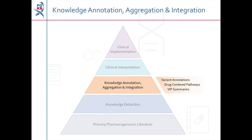Through extensive literature review, our scientific curators also create pathways and very important pharmacogenes, or VIP summaries. PharmGKB pathways are evidence-based diagrams centred around a particular drug that has pharmacogenomic associations. Pathway diagrams show the genes that interact with a particular drug and are accompanied by a written summary of the pathway, as well as links to related literature, drugs, genes and diseases.